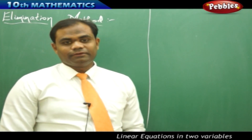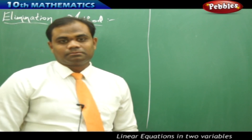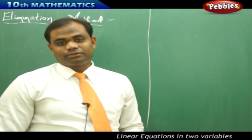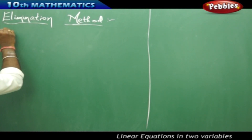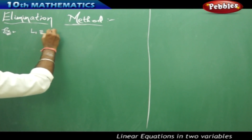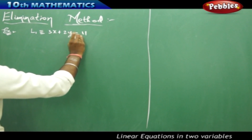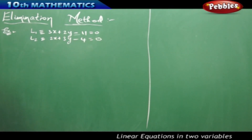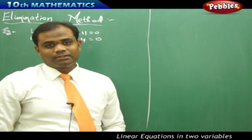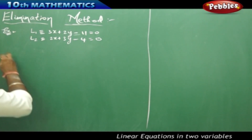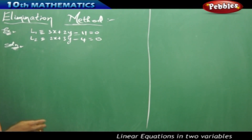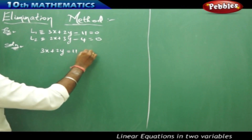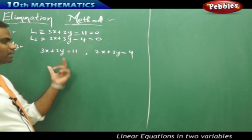Now let's see the elimination method for a new example problem, and the rules involved in finding x and y — the solutions of linear equations in two variables. I take line L1 as 3x plus 2y minus 11 equals 0, and line L2 as 2x plus 3y minus 4 equals 0. In the elimination method, I move constants to the right, giving 3x plus 2y equals 11 and 2x plus 3y equals 4.